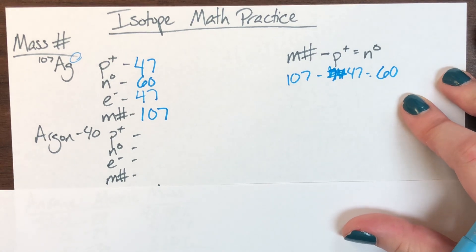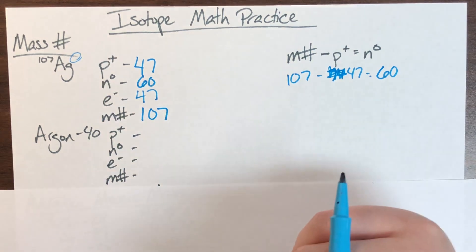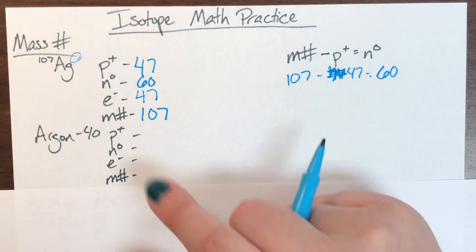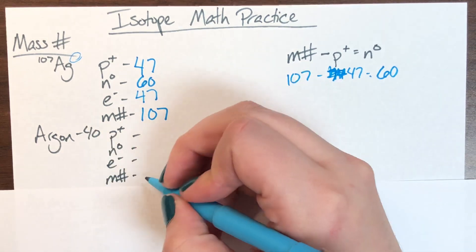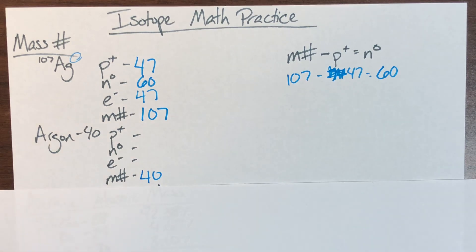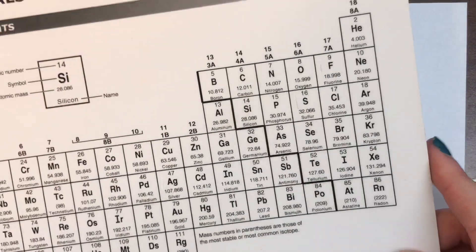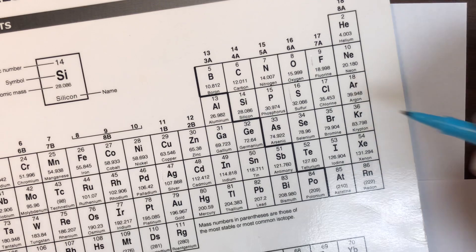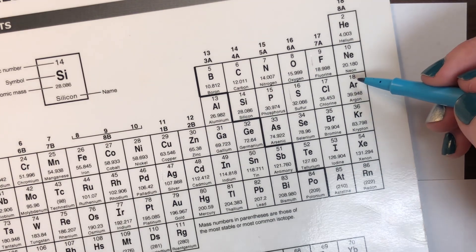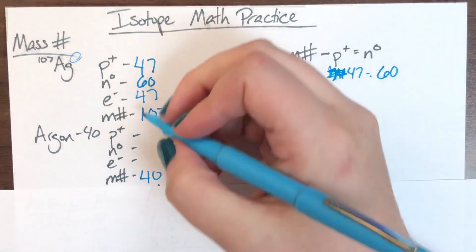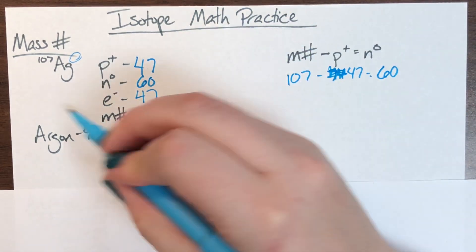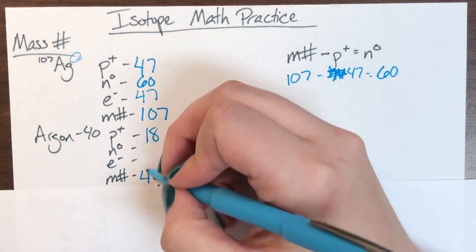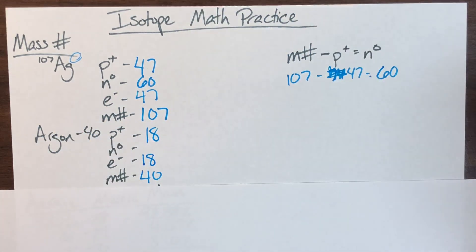We're going to do that one more time with argon-40. This is another notation for isotopes — the one I call isotope notation. Argon-40 means I have a mass of 40. Finding argon on the periodic table, its symbol is Ar, and its atomic number is 18, which means it has 18 protons. Since there is no charge, it also has 18 electrons.